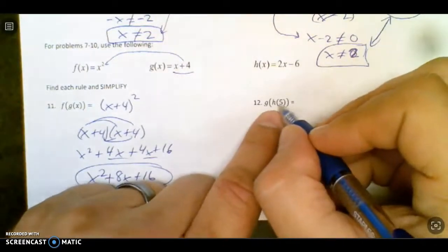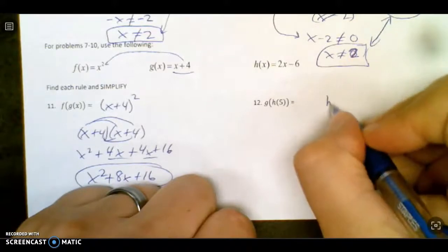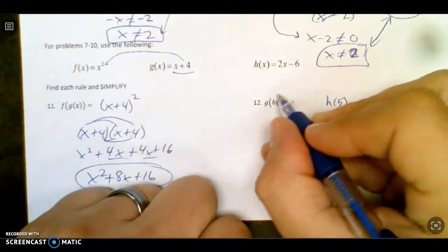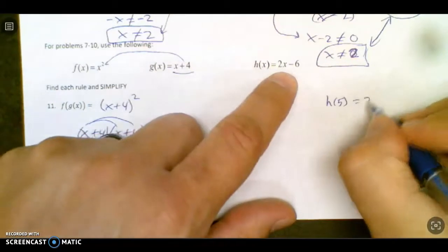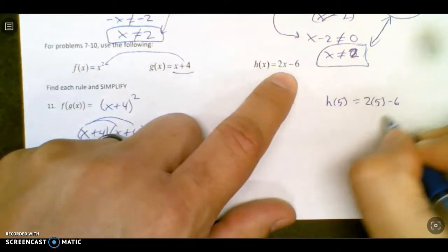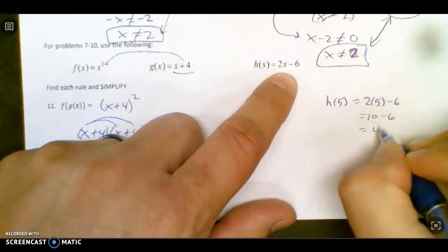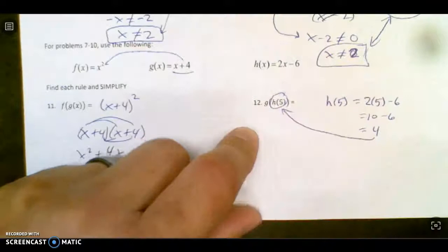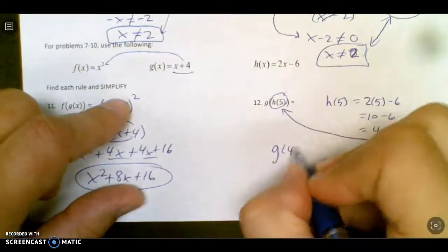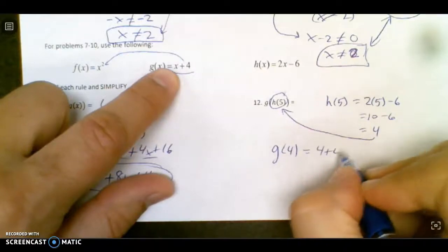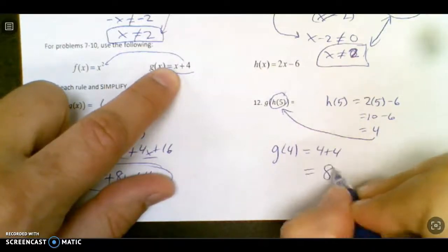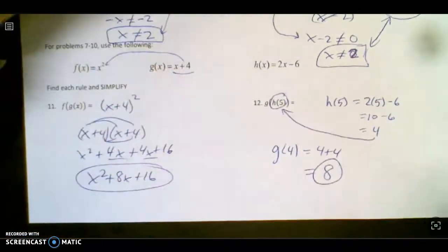Similarly, if you ask me for g of h of 5, I'm just going to find h of 5 and then take that answer and plug it in here. So h of 5 is pretty easy. 2 times 5 minus 6. That's 10 minus 6 equals 4. I'm going to take that answer and plug it right in there for g of x. So g of 4 is what I'm really being asked. That's 4 plus 4, also known as 8. Pretty sweet.